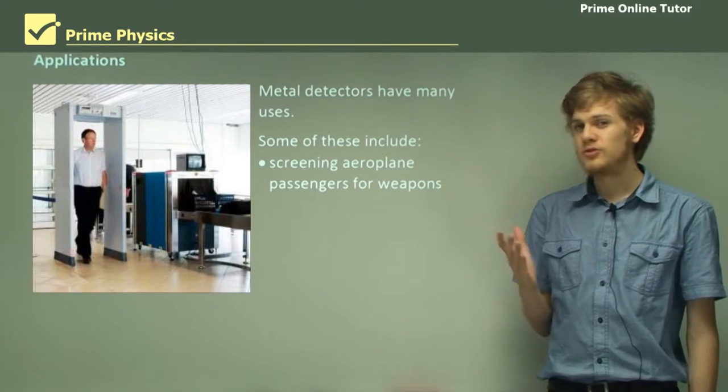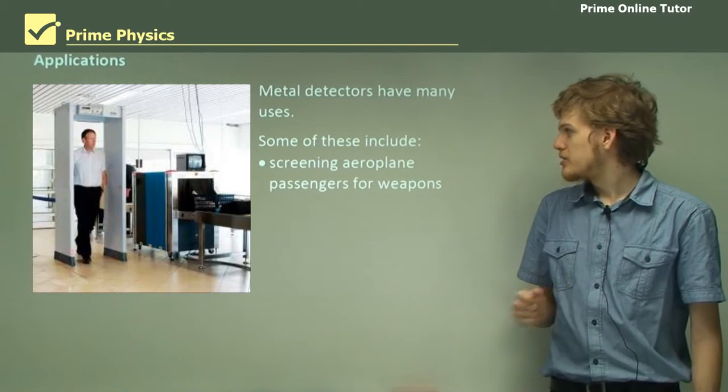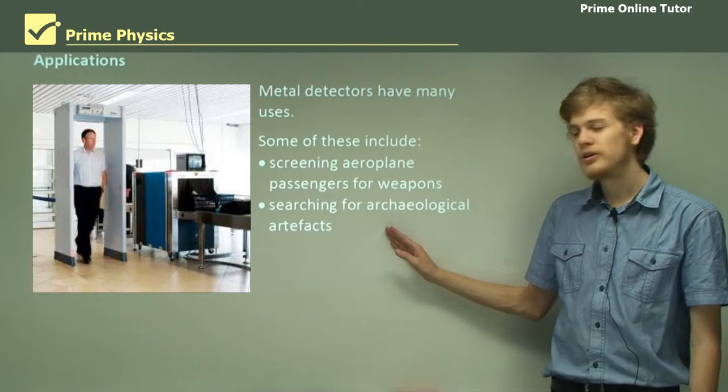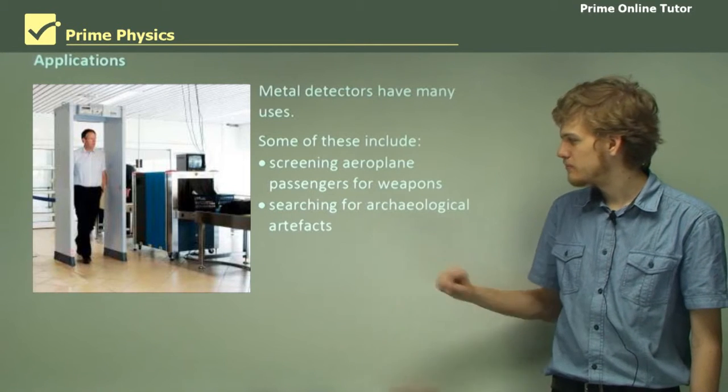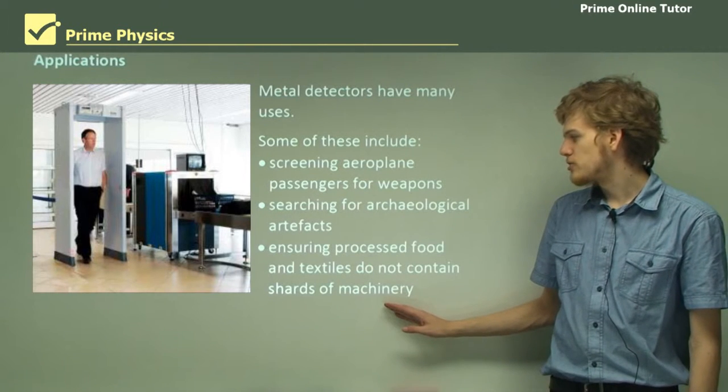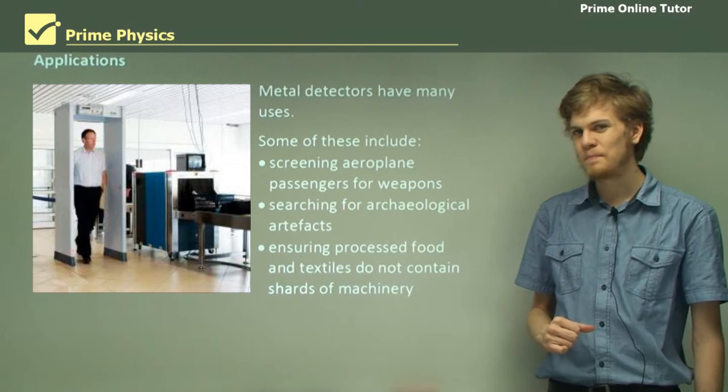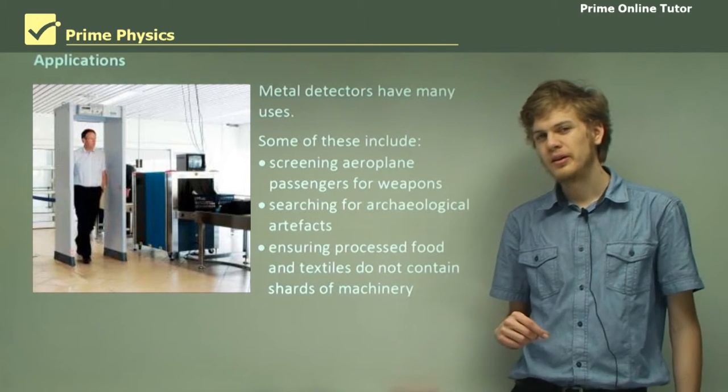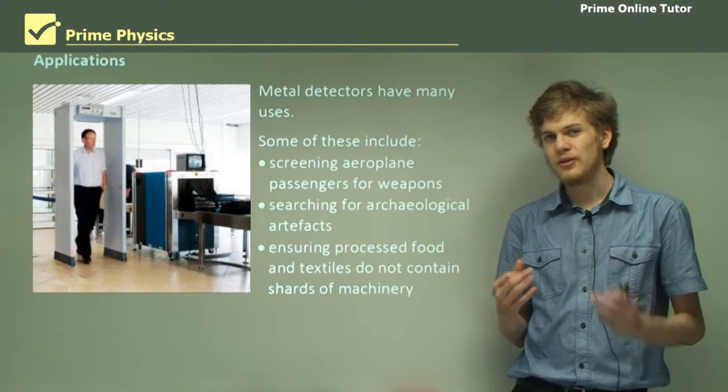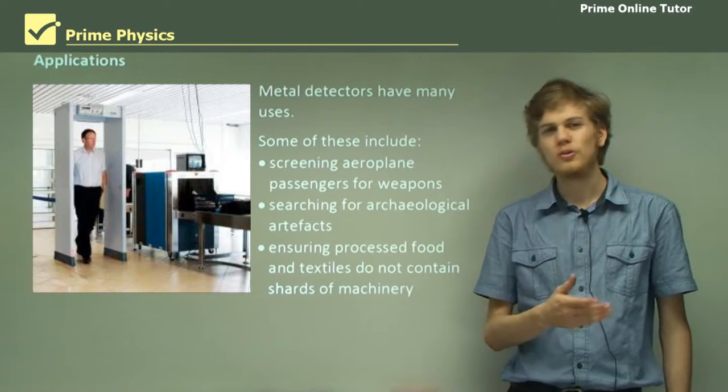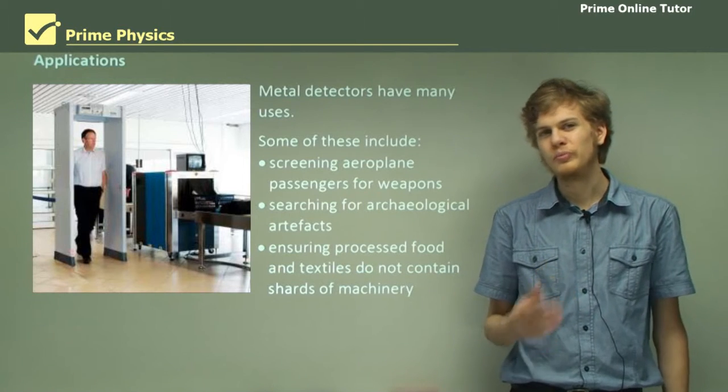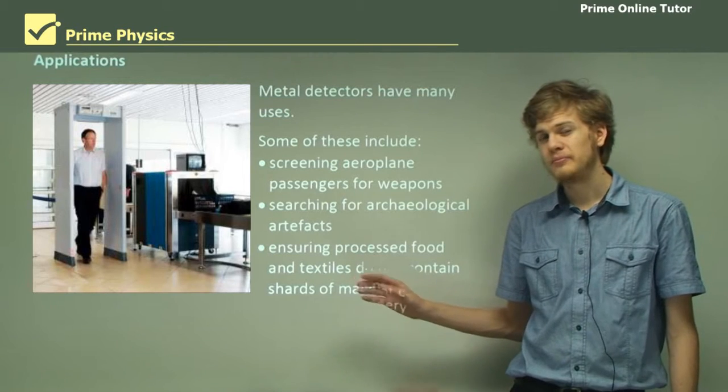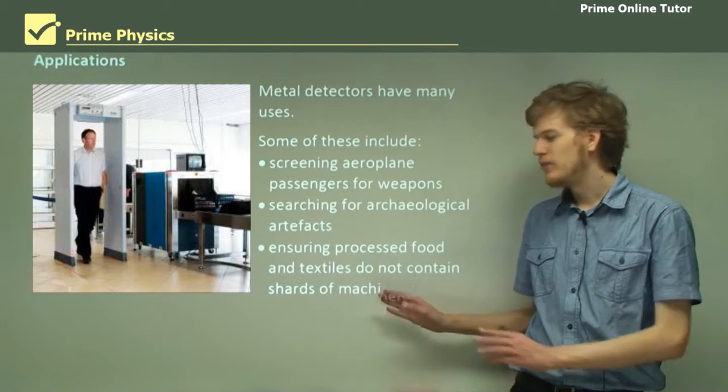Metal detectors have many uses. Some include screening airplane passengers for weapons, searching for archaeological artifacts, and ensuring processed food and textiles do not contain shards of machinery. If a piece of food processing machinery breaks off and ends up in a bag or box of food, we don't want it being sold to the general public. A metal detector can pick this up and prevent it from being sold.